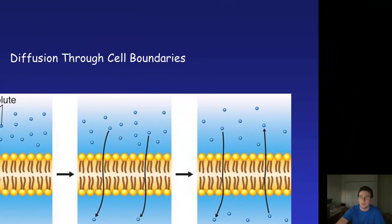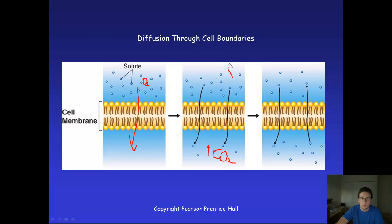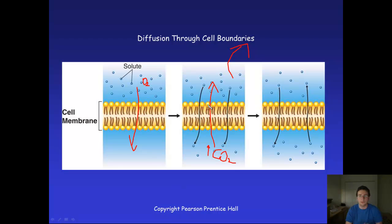Diffusion always moves down a concentration gradient. In the cell, if there's a lot of oxygen outside the cell — in the blood — there's always a tendency for oxygen to rush inside the cell where it's consumed. Meanwhile, carbon dioxide accumulates inside the cell, and since the lungs are removing CO2 from the body, the carbon dioxide has the opposite tendency and moves out of the cell. Gas exchange between oxygen and carbon dioxide is a perfect example of diffusion across the cell membrane.